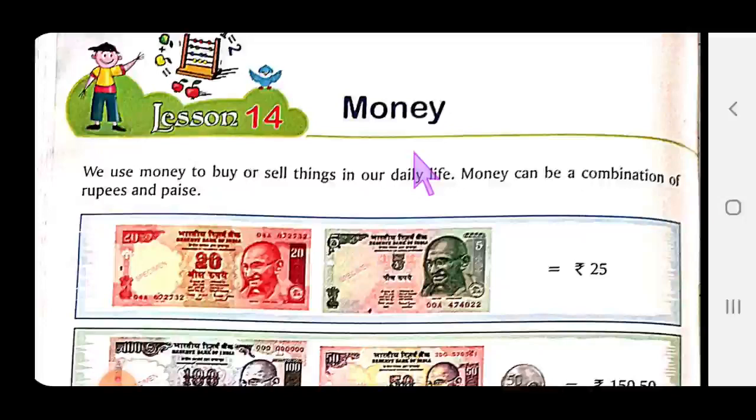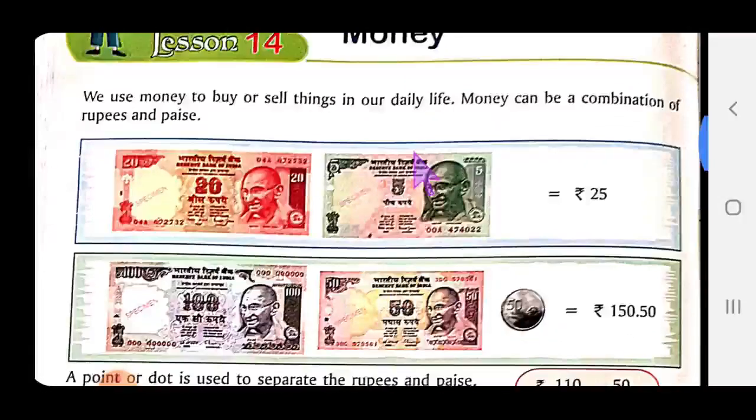Money is currency of a country. The standard unit of Indian currency is rupee. Smallest unit in Indian currency is paise. Indian currency has two forms: notes and coins. In our daily life we use money to buy or sell things.